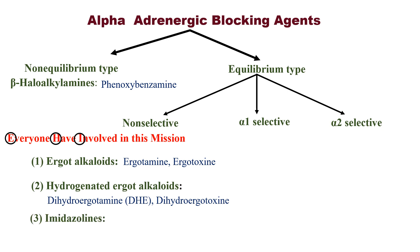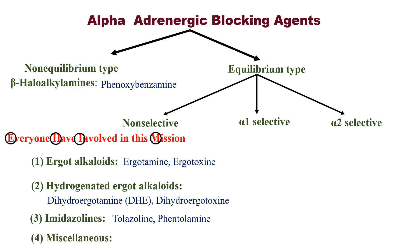Next, I stands for imidazolines — example: tolazoline and phentolamine. In tolazoline, 'zoline' is the same as in imidazoline. Then M stands for miscellaneous drugs — example: chlorpromazine and ketanserin.